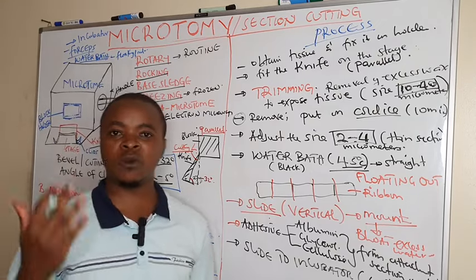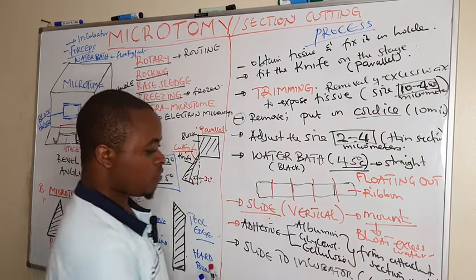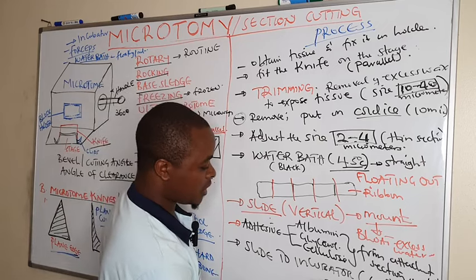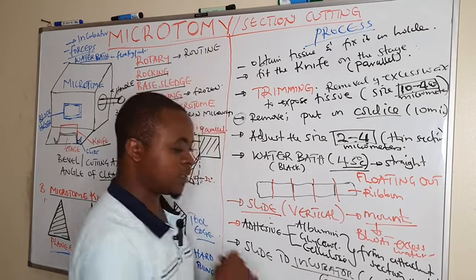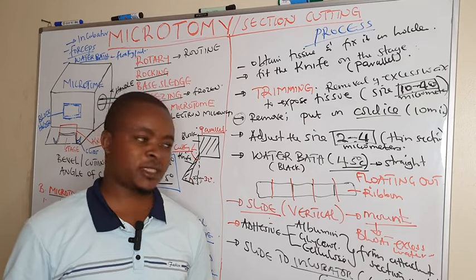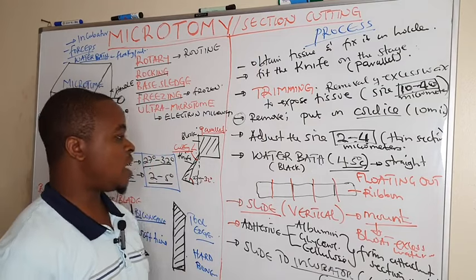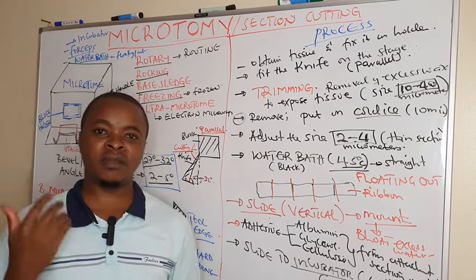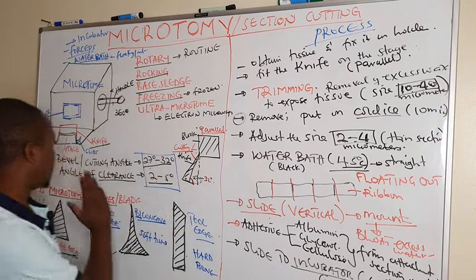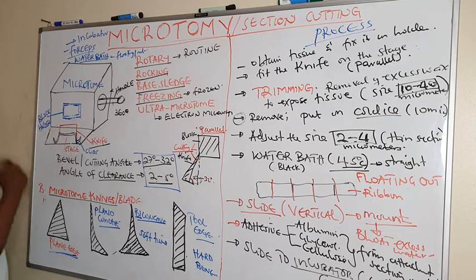We heat in the incubator at 60 degrees for 30 to 60 minutes to melt the wax so that the tissue remains without any wax. This heating enables melting of the wax which was added during embedding. Every time you want to trim different embedded tissues, you have to clean the stage to prevent cross-contamination.